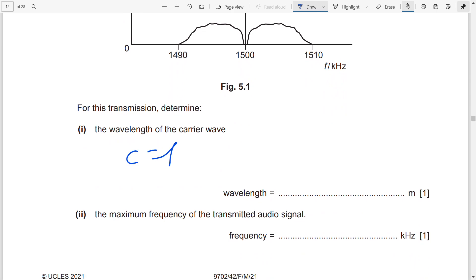This question is asking you to find the wavelength. How can you find wavelength? You know the formula c = fλ. So c = 3.0 × 10⁸ m/s divided by the frequency 1500 Hz. From this you can get the wavelength lambda as 200 meters. Very simple.